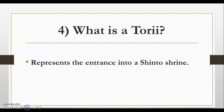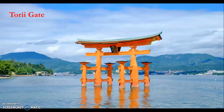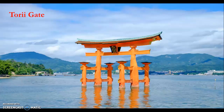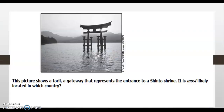What is a torii? A torii represents the entrance into a Shinto shrine. Here is an example of a torii gate entering a Shinto shrine — as you notice, it's located in the middle of the water. The belief is that you go through the torii gate and enter a sort of magical realm on the other side where you practice Shintoism. It is very mystical, reflecting their belief in natural forces. A test question: this picture shows a torii, a gateway that represents the entrance to a Shinto shrine — it is most likely located in which country? If you know Shintoism is only practiced in one country, the answer is Japan.